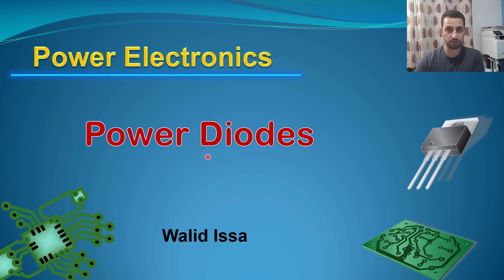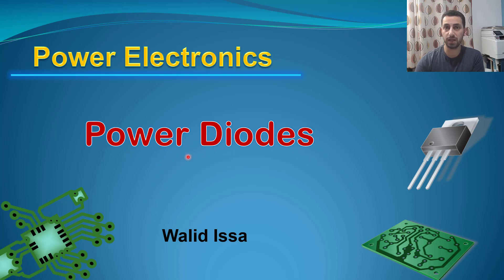This is a continuation for power electronics lectures and today we are going to talk about power diodes. You have some background about diodes from electronics modules where you covered them in general and how they function. But today we are going to specifically talk about power diodes and how they are different from signal diodes and what makes them suitable for power electronic circuits.